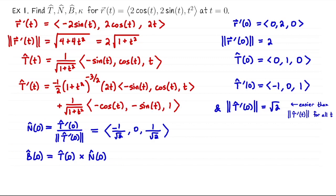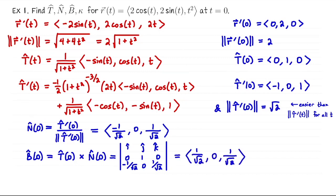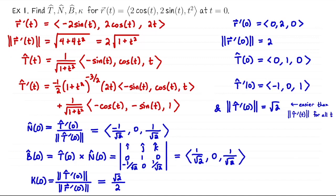We can also easily calculate the unit binormal vector at that moment: it's T-hat at 0 cross N-hat at 0. Setting up the cross product with the specific vectors already computed, the unit binormal vector is (1/√2, 0, 1/√2). Lastly, the curvature at t equals 0 is the length of T-hat prime divided by the speed, which is √2 divided by 2.